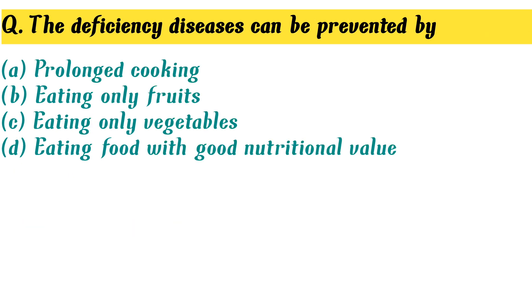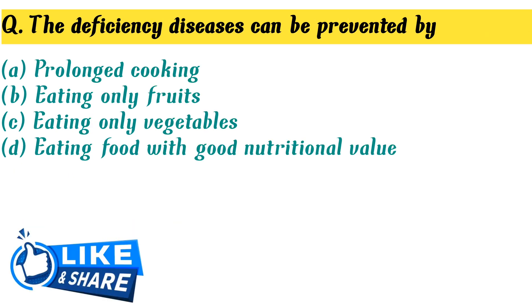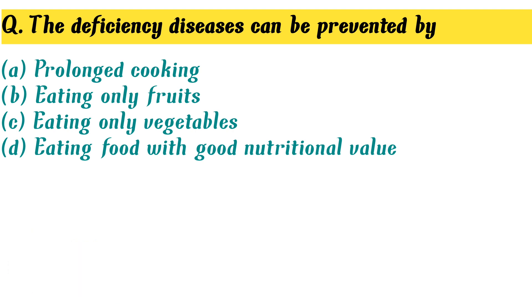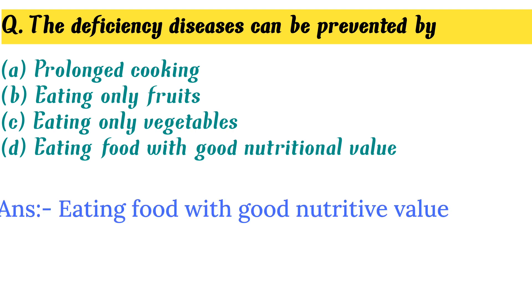The deficiency diseases can be prevented by — Option D. Eating food having good nutritional value is the correct answer.